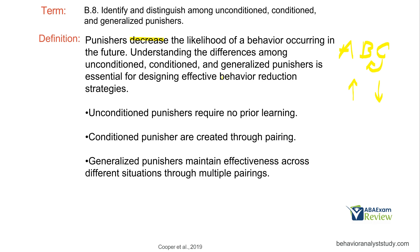No matter what the topography is of the consequence, if the behavior increases it's reinforcement; if it goes down, it's extinction or punishment. When dealing with punishers, we can have unconditioned, conditioned, or generalized punishers. Unconditioned punishers require no prior learning — think pain. Touching a hot stove requires no prior learning when you're in pain. Conditioned punishers are created through pairing. We take that unconditioned punisher of pain from touching the oven and pair it with a reprimand — 'No, don't do that' — conditioning that reprimand to be punishing in itself.